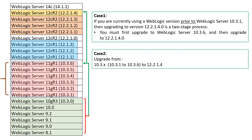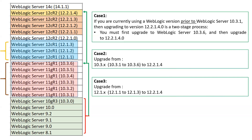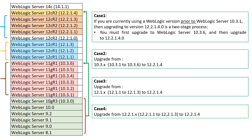Case two is if you are upgrading from any 10.3.x version — 10.3.1, 10.3.2, 10.3.3, 10.3.4, 10.3.5, or 10.3.6 — to 12.2.1.4; there would be a different path for that. Case three is if you are upgrading from 12.1.x versions, meaning 12.1.1, 12.1.2, or 12.1.3. Case four is if you are upgrading from a 12.2.1.x version, meaning 12.2.1.1, 12.2.1.2, or 12.2.1.3, then there would be a different path for that as well.